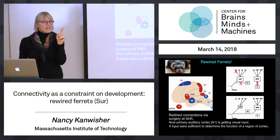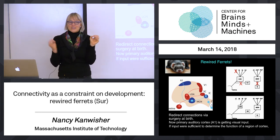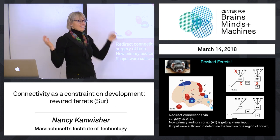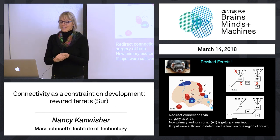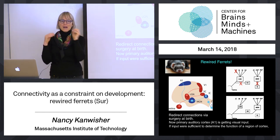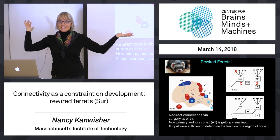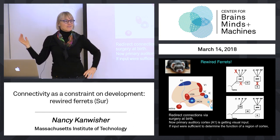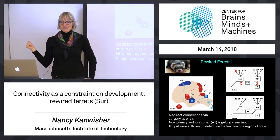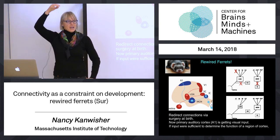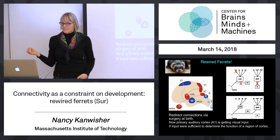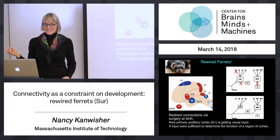If the input were sufficient to determine the function of that region of cortex, what should we find in these rewired ferrets? What should happen in what would have been primary auditory cortex? It should behave like visual cortex — absolutely. If everything is determined by the inputs and we change the inputs, it should behave like visual cortex. Well, that would be freaking crazy — it's miles away in the brain, a totally different part of the brain. But that's what happens. Pretty amazing.